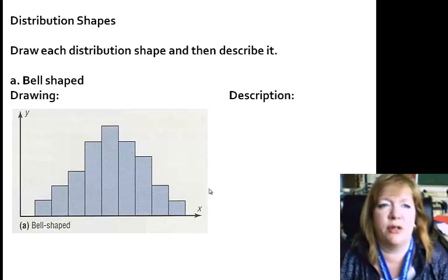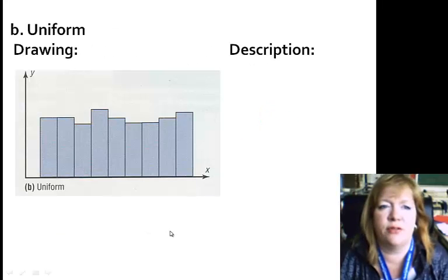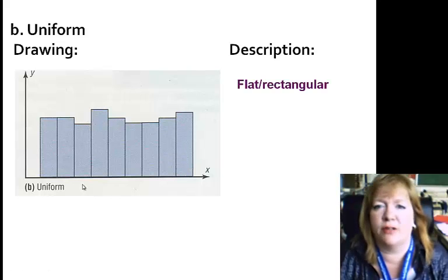Distribution shapes. All you have to do is draw these. These are all in your book, but you might want to pause it if you want a little more time to draw. You can see that this is a bell shape. And the description they give is there's a single peak and it tapers off at both ends. The next shape is uniform. And if you look at the uniform, it does kind of look like a rectangle. It's flat or rectangular. That's the uniform shape.